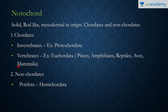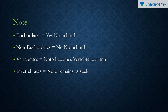Vertebrates are eucordates — fishes, amphibians like frogs, reptiles like snakes and crocodiles, birds, and mammals. In non-chordates, all phyla from Porifera to Hemichordata are included. In eucordates the notochord is present; in non-eucordates no notochord is present; and in vertebrates the notochord is converted into the vertebral column. In invertebrate chordates the notochord remains as such and is not converted.